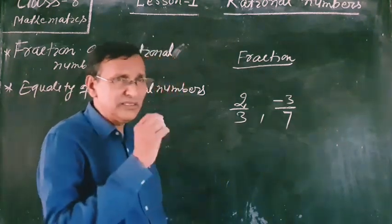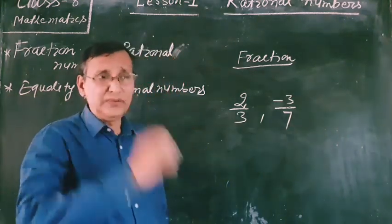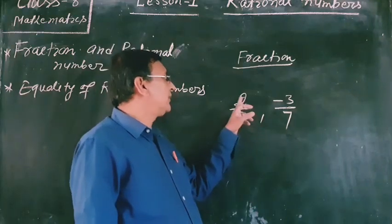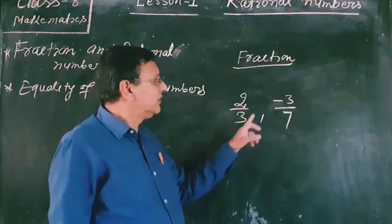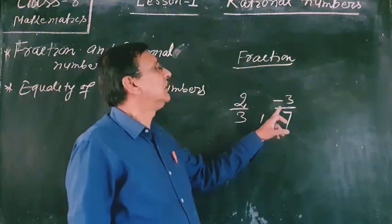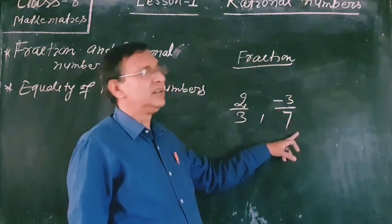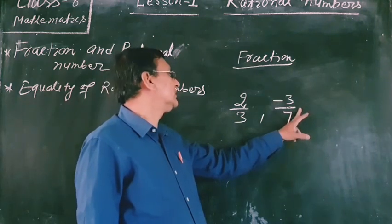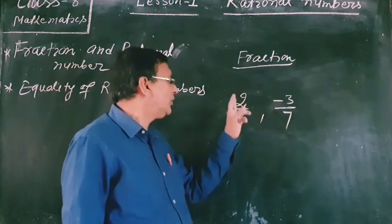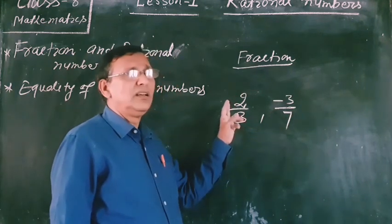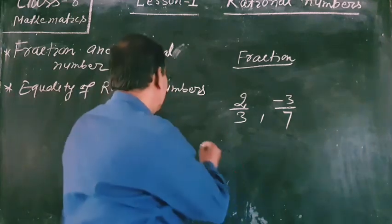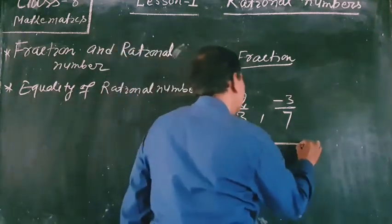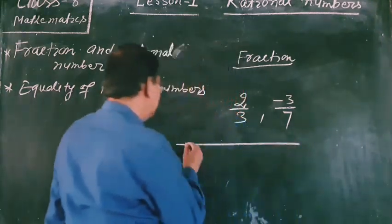So this is the difference: all fractions are rational numbers, but all rational numbers are not fractions.